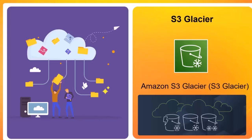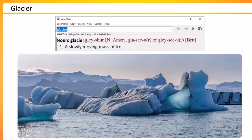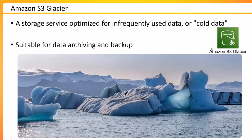Let's talk about another service called Amazon S3 Glacier. If you know about glaciers, a glacier is a slowly moving mass of ice. Amazon S3 Glacier is also designed to keep your cold data. It's a storage service optimized for infrequently used or cold data, suitable for data archiving and backup. If you want to retain your data for a very long period and pay less, then Glacier would be the best service to utilize.